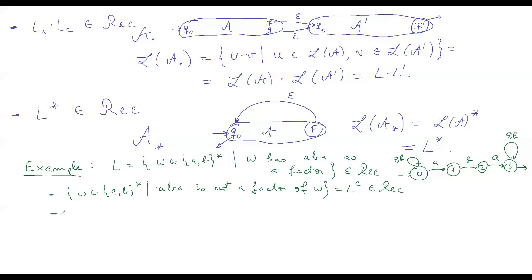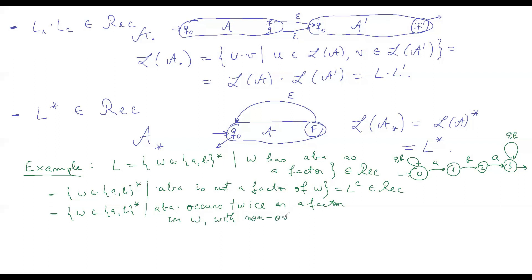Another example: all words in {A,B}* such that ABA occurs twice as a factor with non-overlapping occurrences. This is also recognizable because it is simply L concatenated with L, and that makes it a recognizable language.